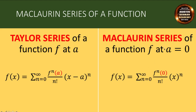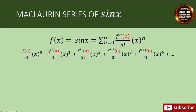The Maclaurin series is just a special case of a Taylor series where A equals 0. So let's focus on this Maclaurin series. For the Maclaurin series of sine of x, we are going to expand sine of x using the Maclaurin formula: the summation from n equals 0 to infinity of F to the nth derivative evaluated at 0, divided by n factorial, times x raised to n, where F of x is sine of x.